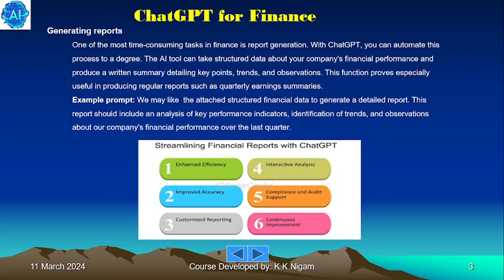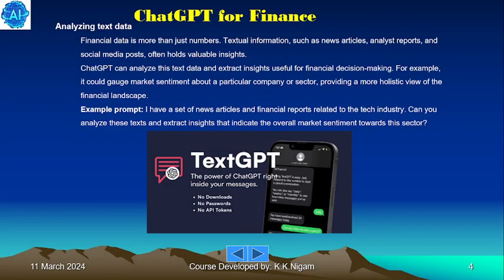One of the most common uses in finance is generating reports. Report generation is one of the most time-consuming tasks in finance, but with ChatGPT you can automate this process to a degree. The AI tool can take structured data about your company's financial performance and produce a written summary detailing key points, trends, and observations — particularly useful for quarterly earnings summaries. Example prompt: use the attached structured financial data to generate a detailed report including an analysis of key performance indicators, identification of trends, and observations about financial performance over the last quarter.